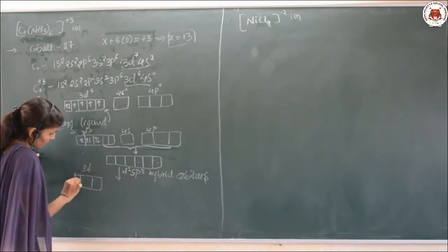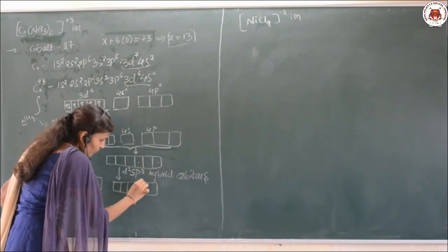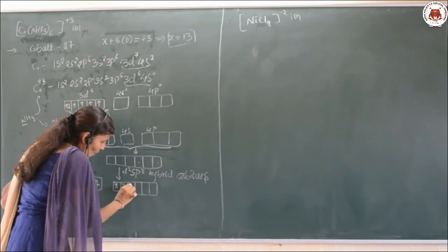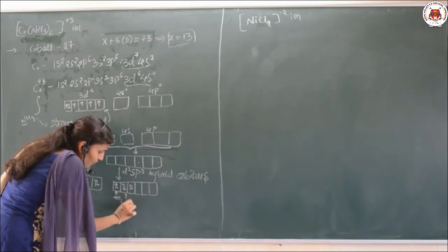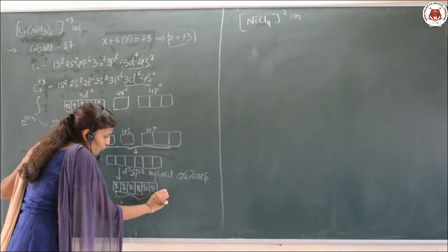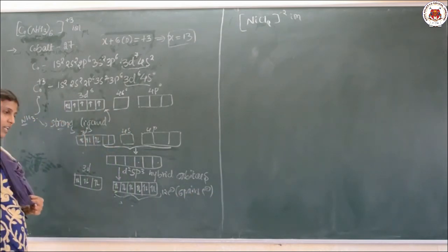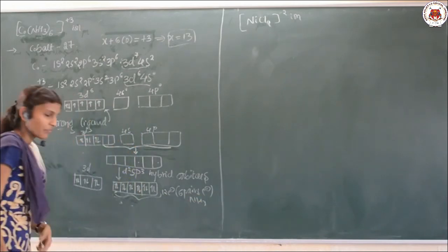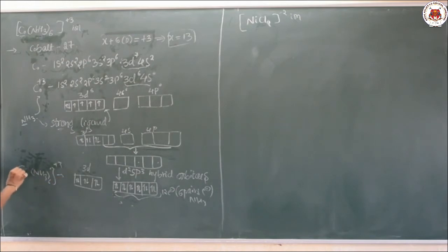The 3d orbital remains as it is with paired electrons. The 6 d²sp³ hybrid orbitals are filled by electrons donated by the amine ligands. Each amine donates 1 lone pair, so 6 amines donate 6 pairs (12 electrons total) to the central metal atom, forming the [Co(NH₃)₆]³⁺ complex.